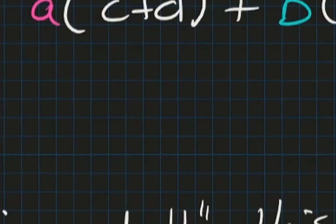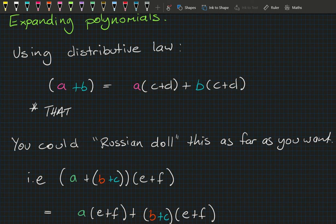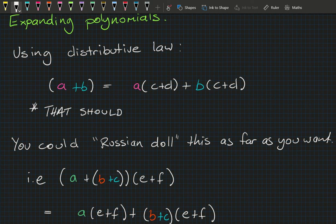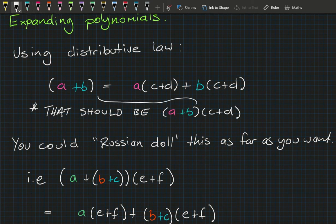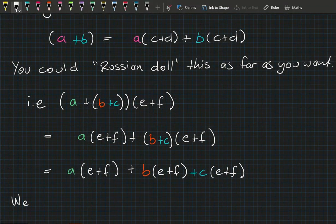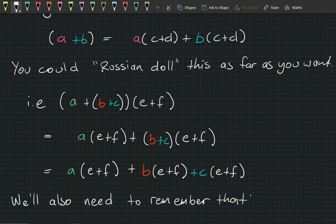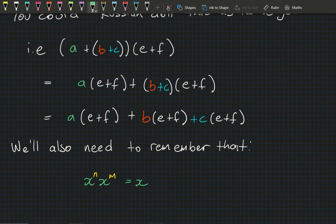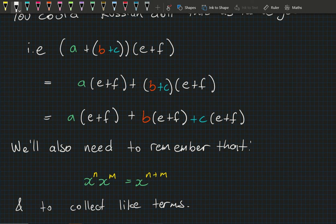I'm editing this video and I need to note a correction: a+b does NOT equal a(c+d) + b(c+d) — that should read (a+b)(c+d) in the top row. We also need to remember that xⁿ × xᵐ = x^(n+m), and how to collect like terms. That's really all there is to it.